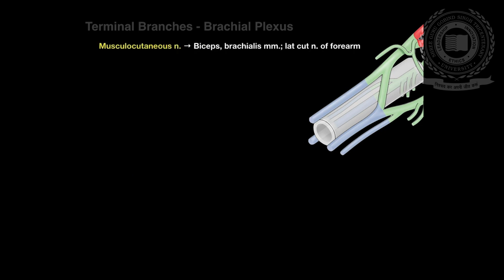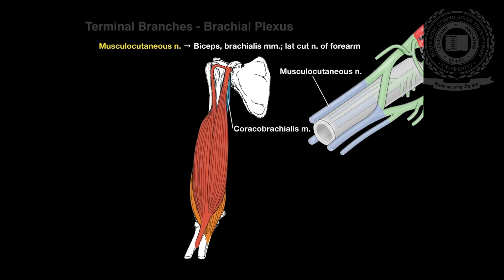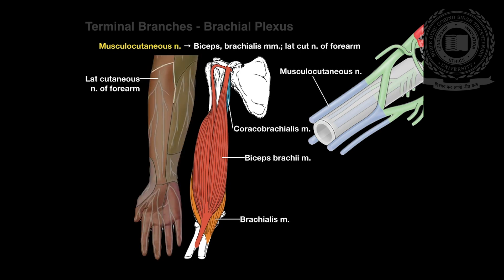The musculocutaneous nerve is a mixed nerve containing sensory and motor axons, derived from the lateral cord. The musculocutaneous nerve leaves the brachial plexus high in the axilla at the lower border of the teres major muscle and passes into the coracobrachialis muscle. It innervates the muscles in the flexor compartment of the arm and carries sensation from the lateral side of the forearm.